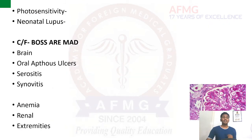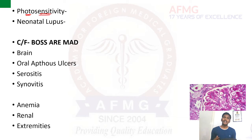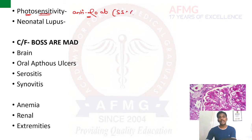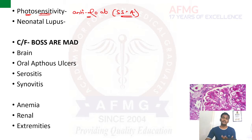In cases of SLE there is photosensitivity — an erythematous rash over the skin that worsens with sunlight exposure, along with itching at times. This photosensitivity is due to an antibody known as anti-Ro antibody, also called SSA antibody.